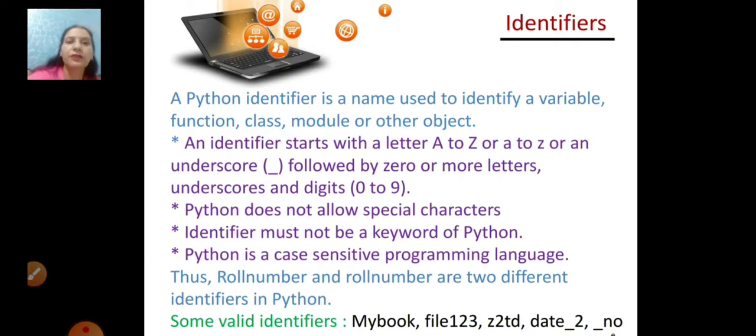A Python identifier is a name used to identify a variable, function, class, module, or other object. There are certain rules in Python which have to be followed to form a valid variable name.